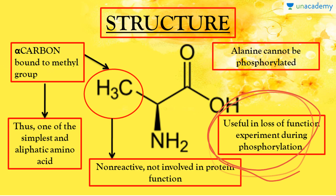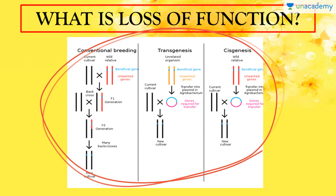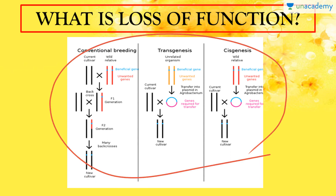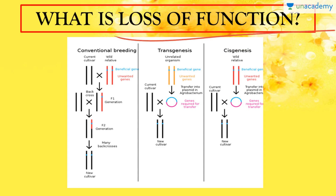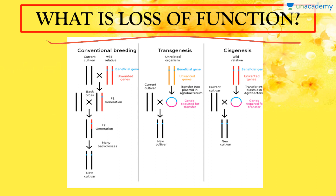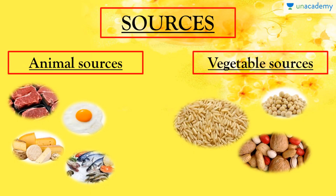The methyl group is non-reactive in nature and not involved in protein function. It is used in loss-of-function experiments during phosphorylation studies because alanine cannot be phosphorylated. Loss-of-function experiments are carried out in genetic engineering to change how an organism functions. Because alanine cannot be phosphorylated, if it is added additionally into a protein sequence, it results in loss of function. This is useful when we want to cancel a particular function in an organism — we can add alanine to a sequence by genetic engineering to carry out the loss-of-function phenomenon.